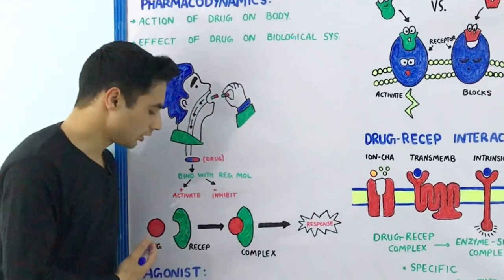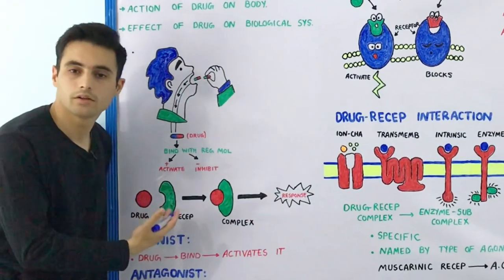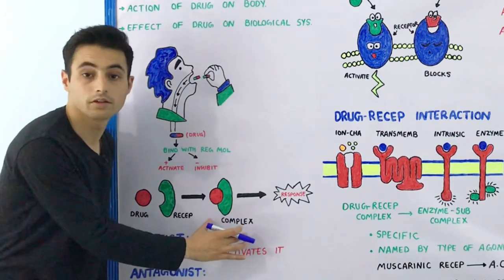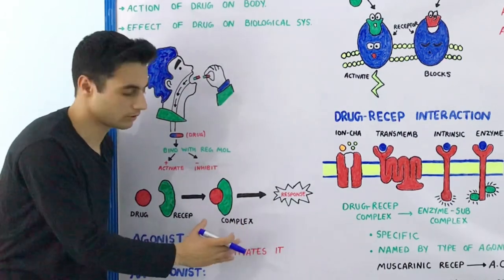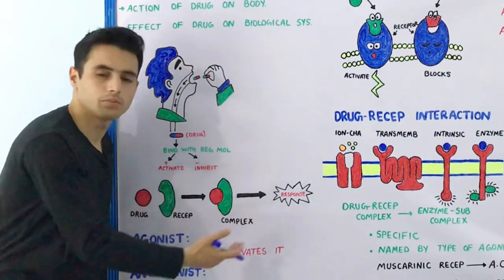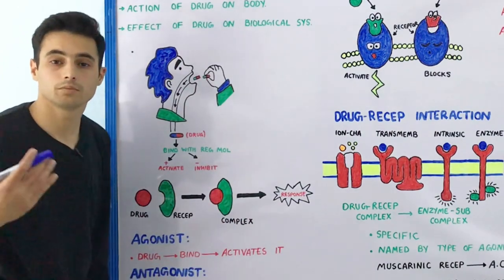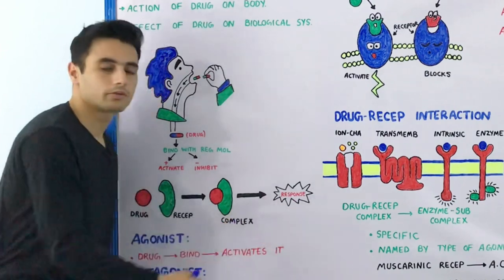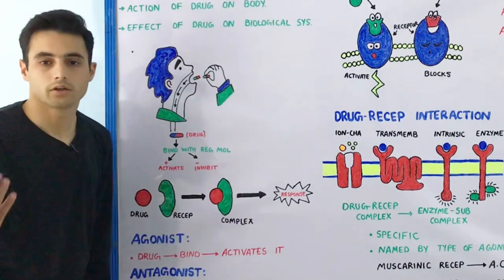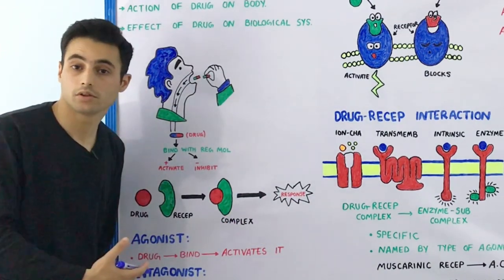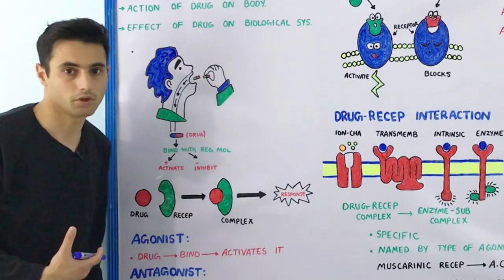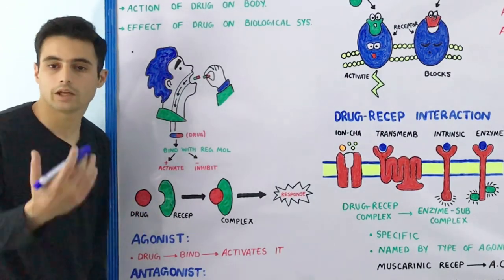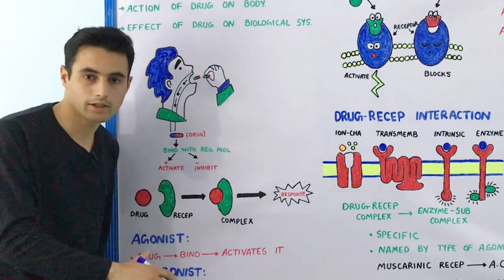The drug will bind with the receptors to form a complex known as the drug-receptor complex. This complex is very similar to the enzyme-substrate complex. After forming the complex, they will perform some kind of biochemical or physiological response inside your body. The drug can act as an agonist as well as an antagonist.